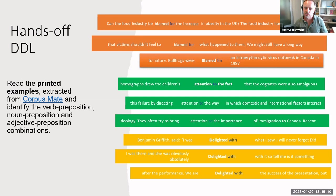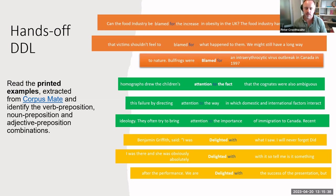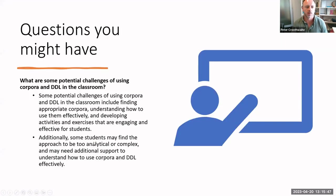In contrast, a hands-off activity is where the teacher, prior to class, goes into the corpus and pulls out concordances themselves. These are copied, pasted into a Word document, and printed as a handout for students to analyze together in a classroom setting. This is often used as a precursor to direct hands-on DDL for learners just starting out, or in contexts where students don't have access to computers — such as Vietnam and Indonesia, where teachers are often the only ones with a computer in the room.